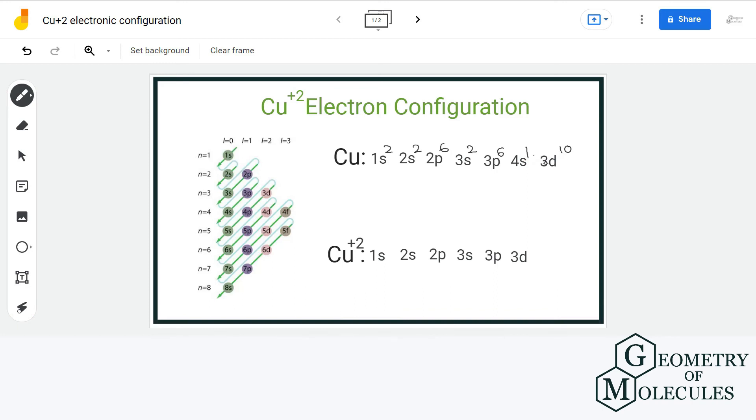So the electronic configuration of Cu²⁺ will be 1s2, 2s2, 2p6, 3s2, 3p6, 3d9.